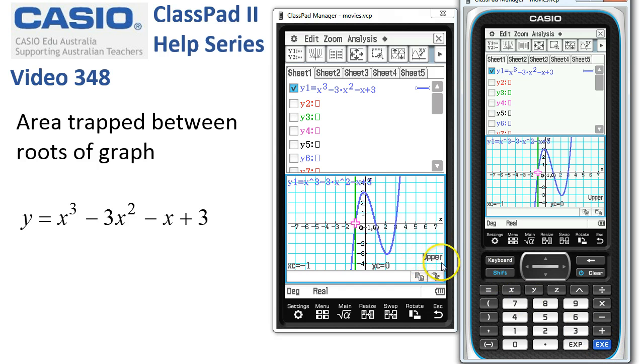Now you can see the information in the bottom right of the screen is saying it wants us to locate the upper boundary, so we'll tap right. But we want to go all the way to this last root, so we'll tap once more, and then to select it we tap execute. That's enough for ClassPad.